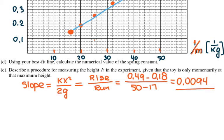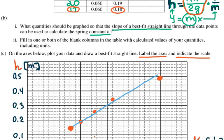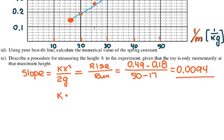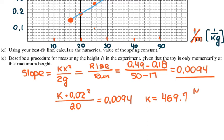Then I'm gonna plug in my values. I'm looking for k. k times x², it's 0.02 squared, over 2g, which is 20, equals 0.0094. So k is equal to 469.7 newtons per meter.